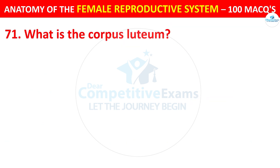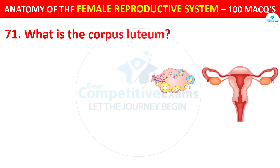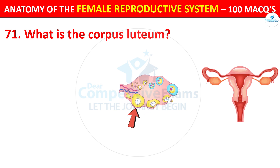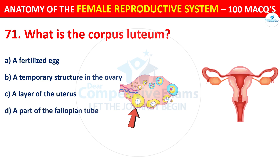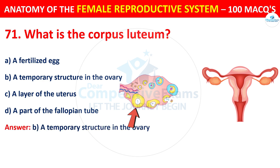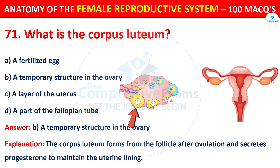Question number 71. What is the corpus luteum? Options: a fertilized egg, a temporary structure in the ovary, a layer of the uterus, or a part of the fallopian tube. The correct answer is B — a temporary structure in the ovary. The corpus luteum forms from the follicle after ovulation and secretes progesterone to maintain the uterine lining.